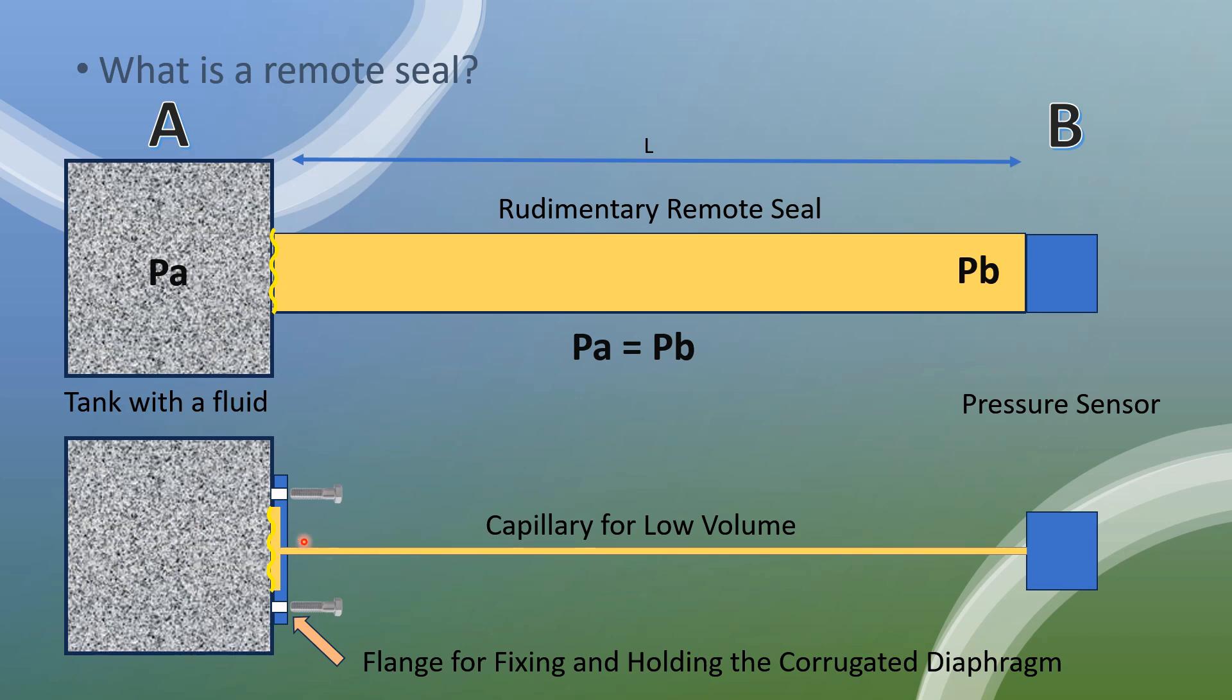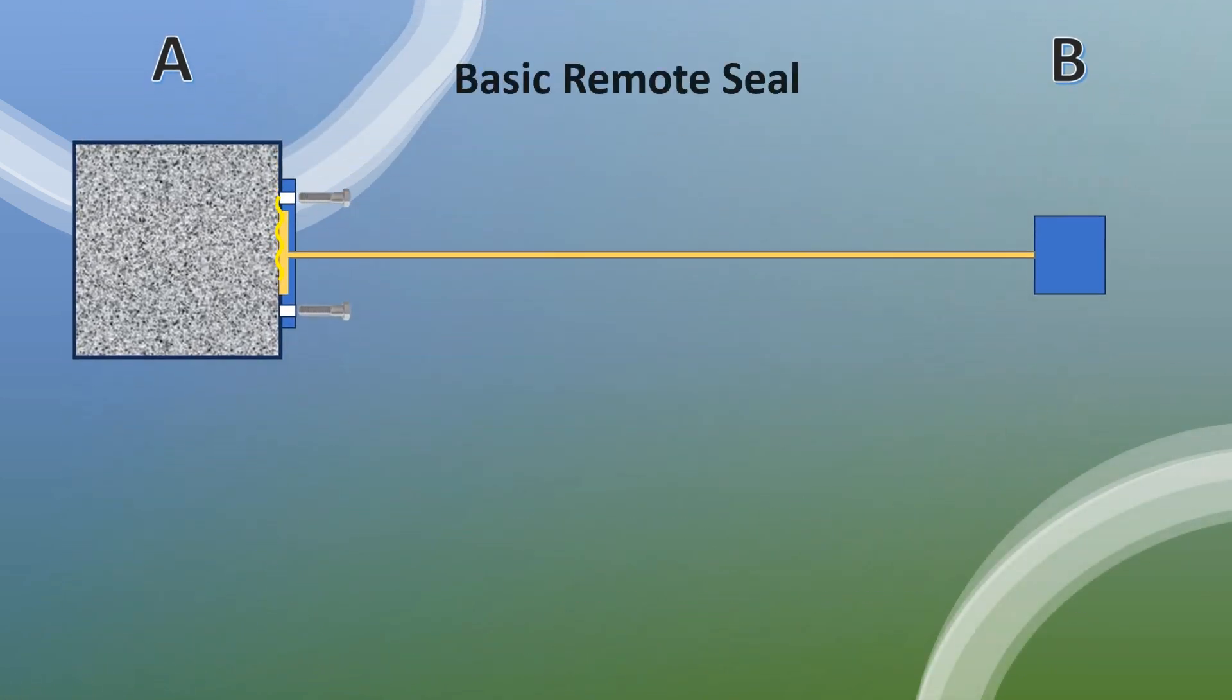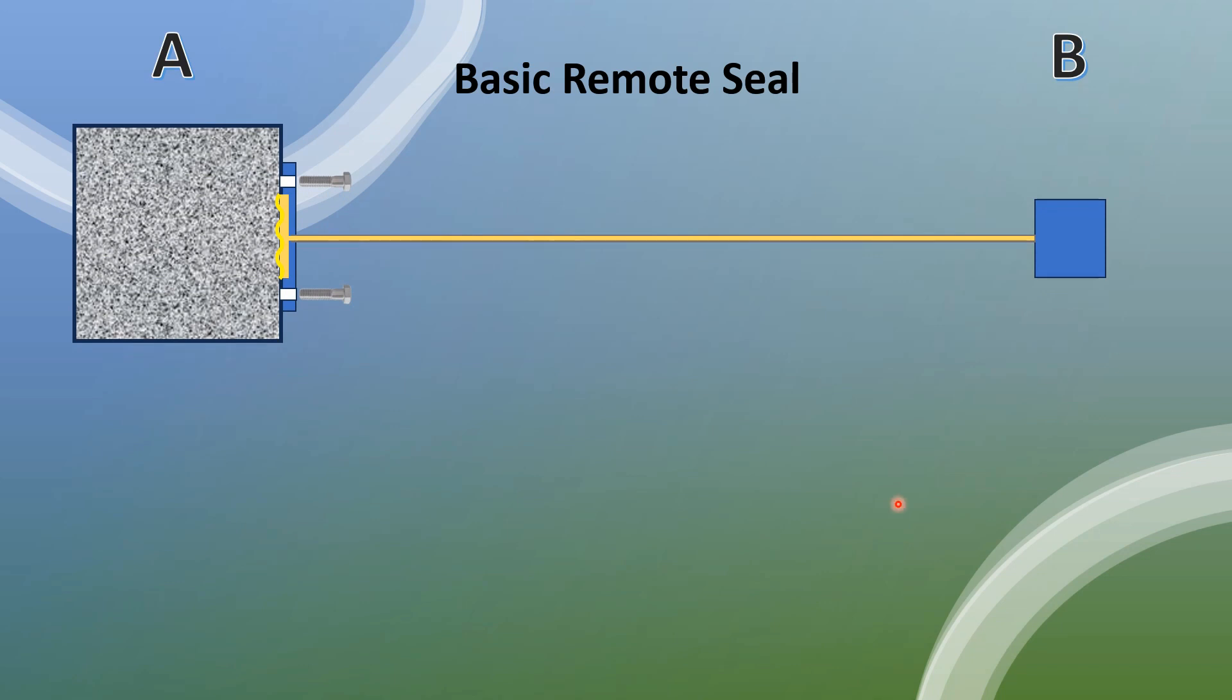At the same time, I still have the process A and the point isolated from point B. This is what we can call a way better remote seal. Now that we have a basic remote seal represented like that, these flanges can be attached to the tank A and reflect pressure from A to B.